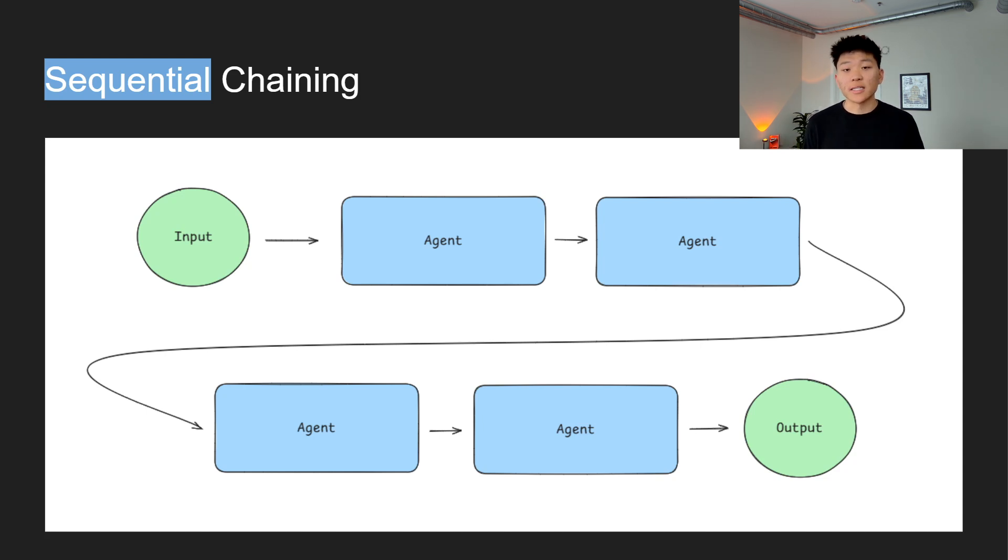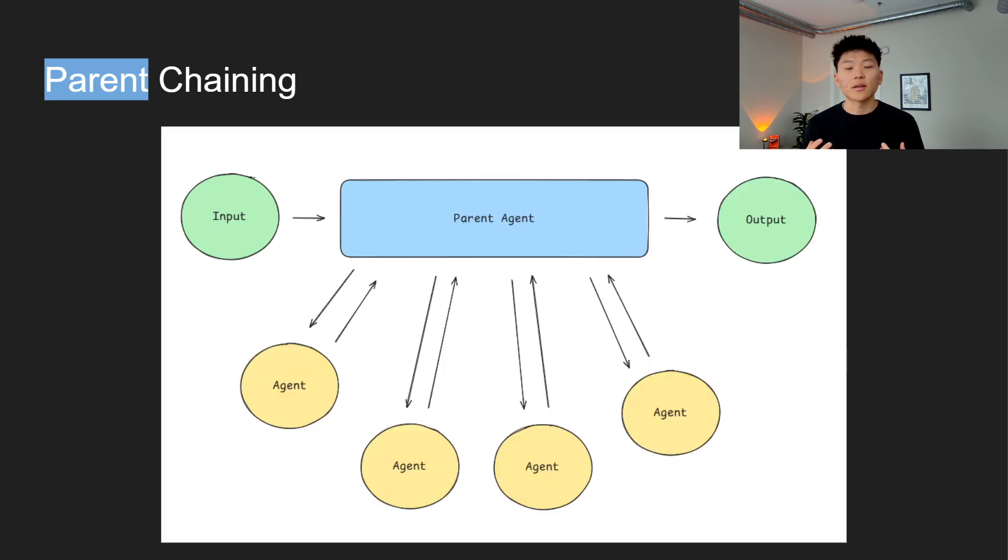The biggest advantage here is its simplicity. It's easy to set up and debug because each step follows logically from the last. However, it can become a bottleneck if one agent takes too long to complete its task or just fails entirely. Then we have parent chaining, which involves a central parent agent that coordinates multiple child agents. Instead of a linear flow, the parent agent evaluates the situation and then it's able to delegate tasks to different child agents appropriately.